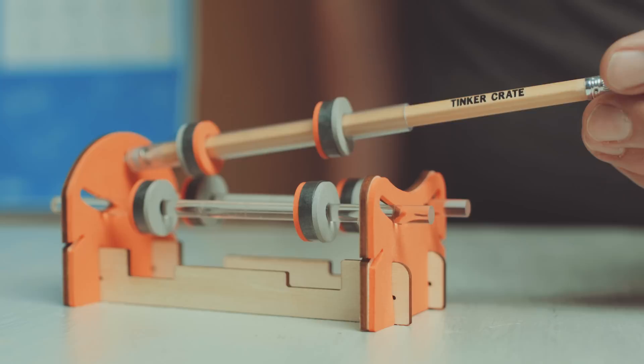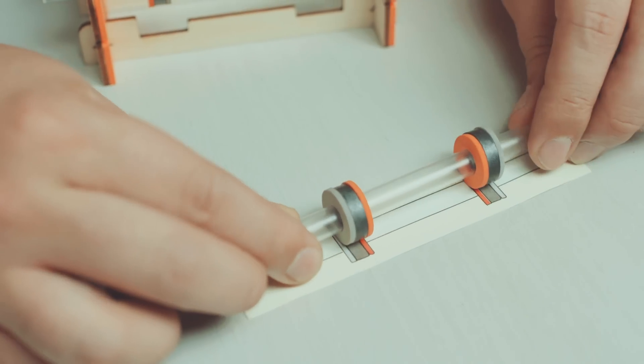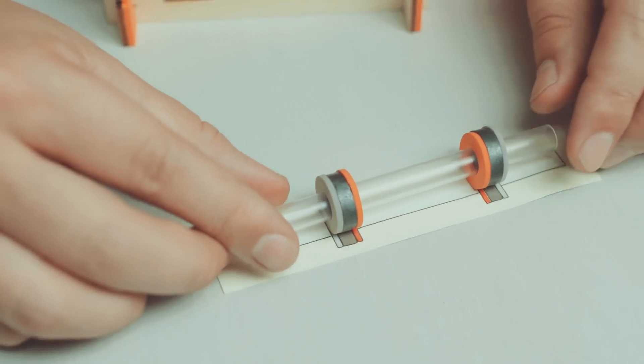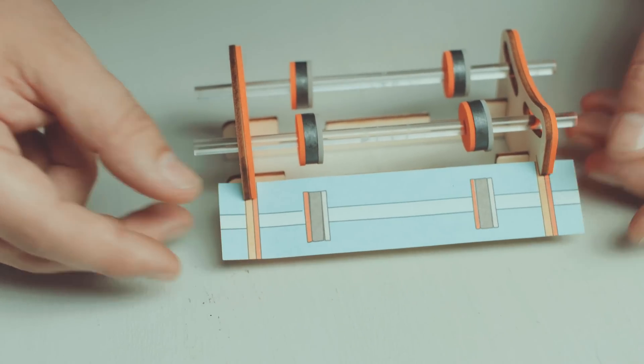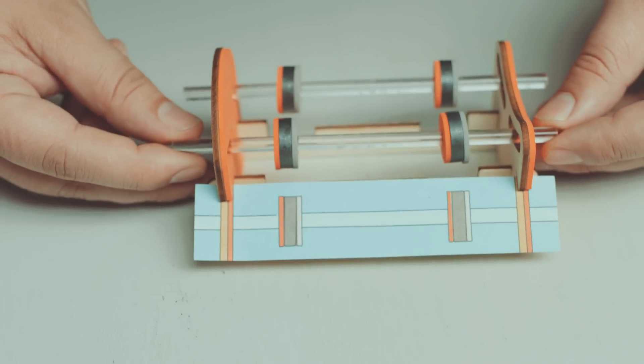Yours might not float on the first try. Here's some tips that might help you get it right. Double check your pencil holder against the alignment card. Check the magnets in the frame against the other side of the alignment card. Make sure everything is lined up right.